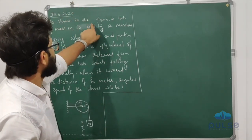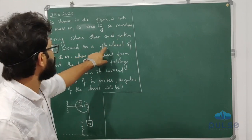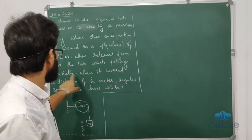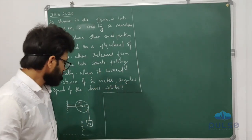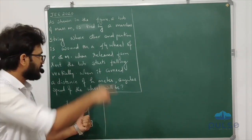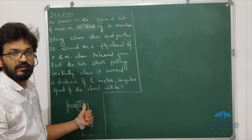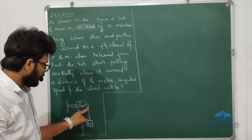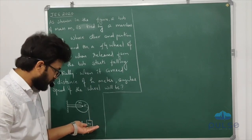As shown in the figure, a bob of mass M is tied by a massless string whose other end is wound on a flywheel of radius R and mass M. When released from rest, the bob starts falling vertically. When it has covered a distance of H meters, find the speed of the wheel. This flywheel is treated as a disc — assume it is a disc with the string wound around it.